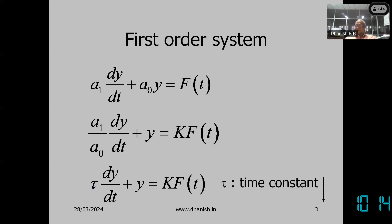Tau is the time constant of the measuring instrument. First order systems require only one constant to define their properties — that is the time constant. If we know the time constant, we can predict the behavior of first order systems to any signal.